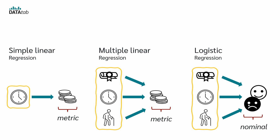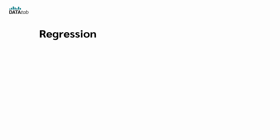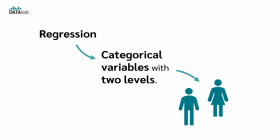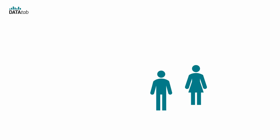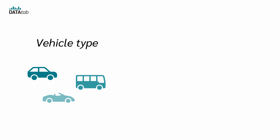But what about the independent variables? In all cases, the level of measurement of the independent variables can be nominal, ordinal, or metric. In regression, you can only use categorical variables with two categories or levels, such as gender with male and female. In this case, we can code one category with zero and the other with one. However, if a variable has more than two categories, like vehicle type, there is an easy solution: we create dummy variables. We'll explain more about dummy variables later in this playlist.